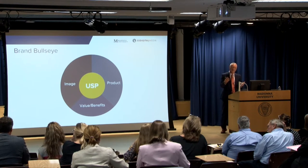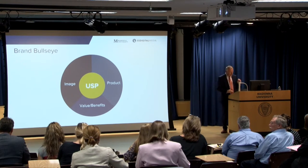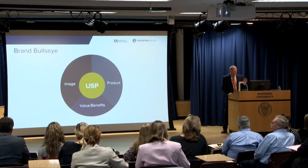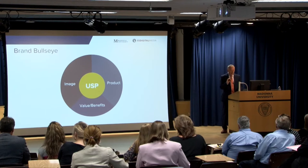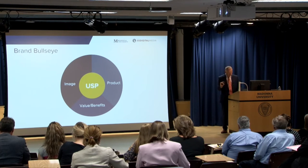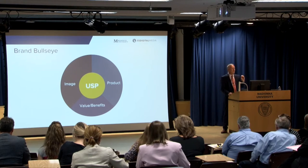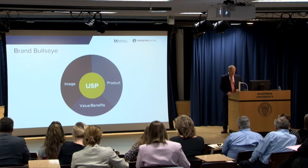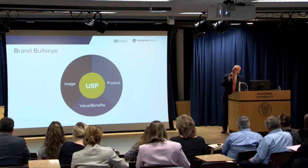So Product is on the right-hand side. Number two is Image — how do you want to be perceived within that service category? Because you cannot be for everyone. What's your impression, what's the personality, and why should they like you? That's your Image.